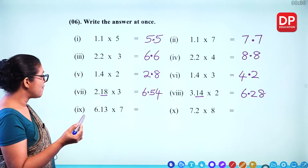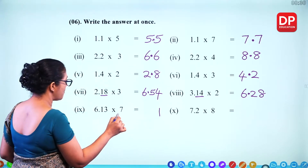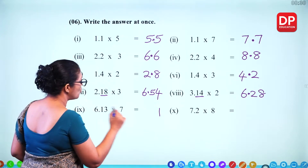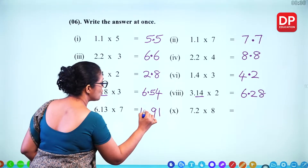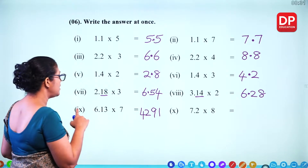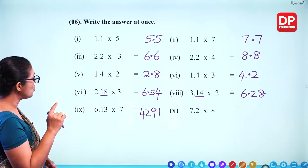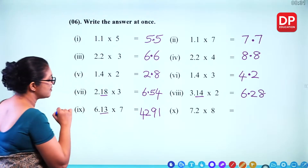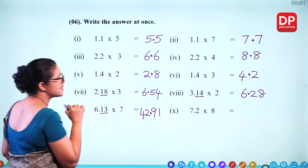For 6.13 times 7: 613 times 7 — 7 times 3 is 21 (2 remaining), 7 times 1 is 7 plus 2 is 9, 7 times 6 is 42 — giving 4291. With 2 decimal places, the answer is 42.91. For 7.2 times 8: 72 times 8 — 8 times 2 is 16 (1 remaining), 8 times 7 is 56 plus 1 is 57 — giving 576. With 1 decimal place, the answer is 57.6.